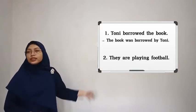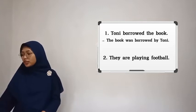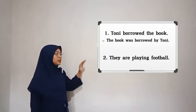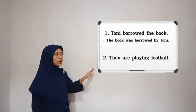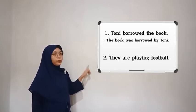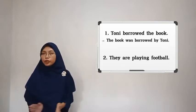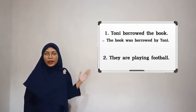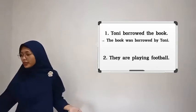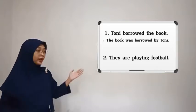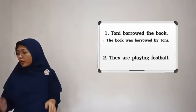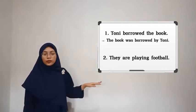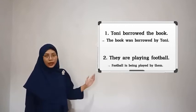In active voice, the subject is written before the action, while in passive voice the subject is written after the action and is preceded by the word 'by.' So before we write the subject in passive voice, we need to write the word 'by' first, then the subject. Let's have another example: 'They are playing football' in active voice. Can anyone change it into passive voice? Great — the passive voice is: 'Football is being played by them.'